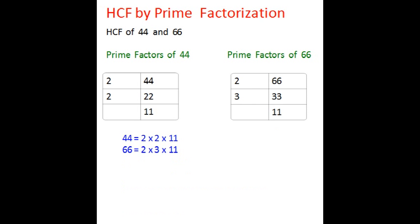What we see here are the common factors are 2 and 11. Let's take a product of it to get the highest common factor. The product is 22 and 22 is the highest common factor.